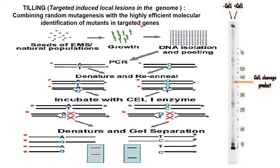After that, these seeds are sown in the land up to the M4 generation. Usually in plant breeding we refer to F1, F2 generations, but since the seeds are mutated, we represent each generation as M1, M2, up to M4 generation.